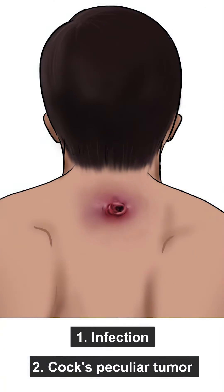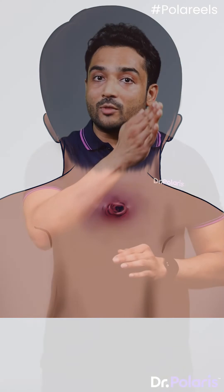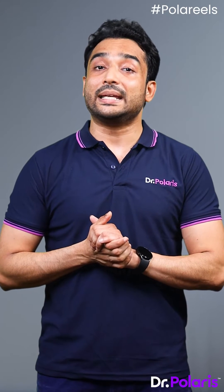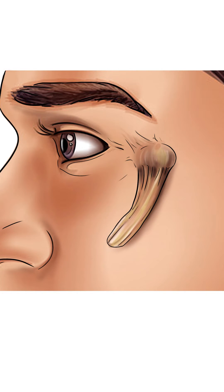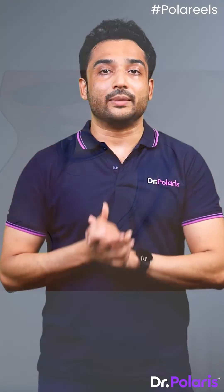Three complications. First, infection. Second, cock's peculiar tumor, due to the surface of the cyst getting ulcerated. Third, sebaceous horn, because the contents — that is, the discharge — get hardened.